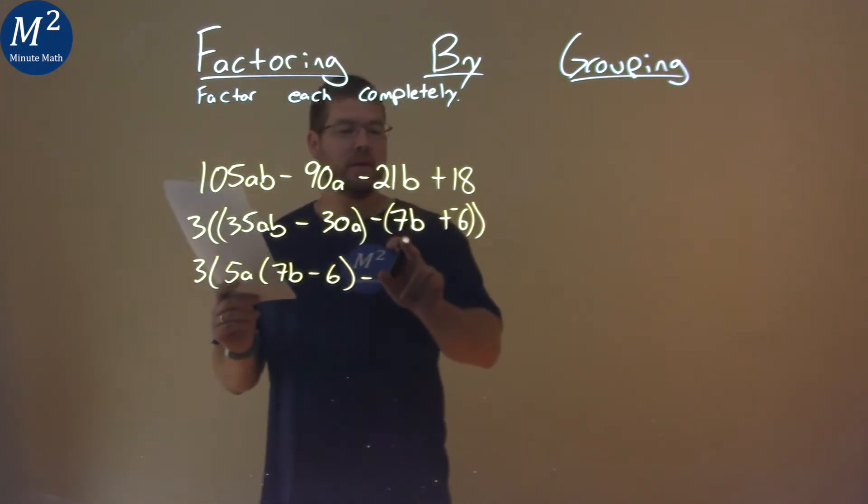What's in 7b minus 6 like term? Nothing really. But to show a place value, I'm going to pull out a 1, and I have 7b minus 6 here.